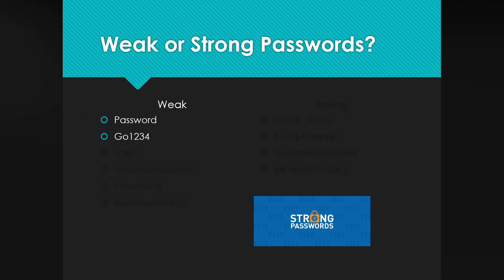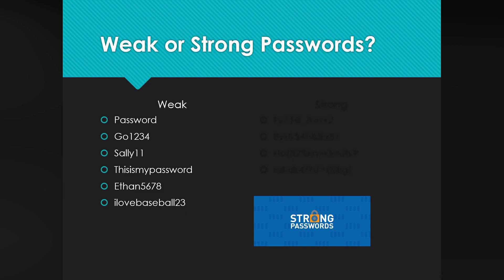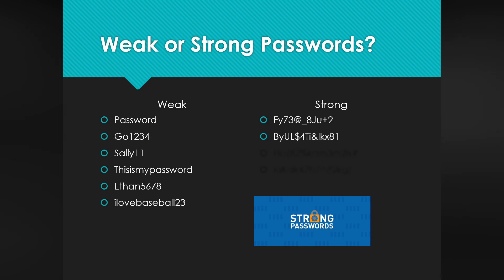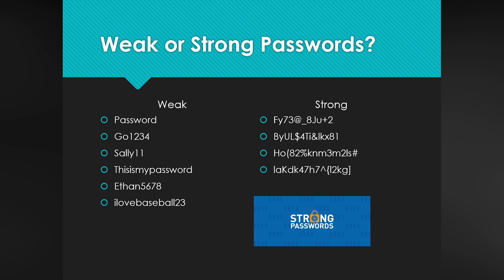Examples of weak passwords include just the word 'password,' simple names, or sequential numbers — you can see why those are not very strong. On the other side, stronger passwords use upper and lowercase letters, symbols, and all kinds of combinations that don't spell out any words — those would be much harder for someone to guess or hack.